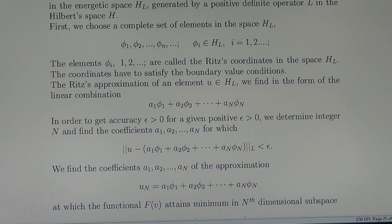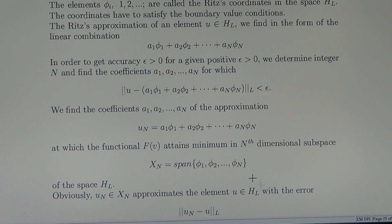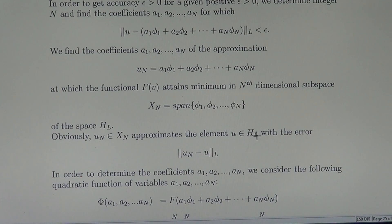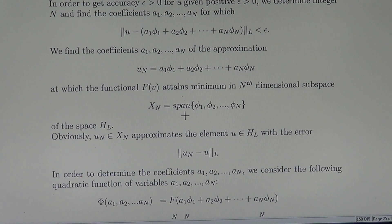We find the coefficients A1, A2, ..., An of the approximation U_n equals A1·Phi_1 plus A2·Phi_2 plus ... plus An·Phi_n, at which the functional F attains its minimum in the N-dimensional subspace of the space H_L.